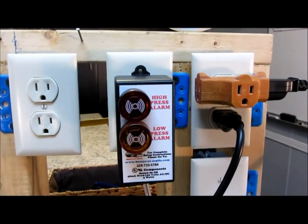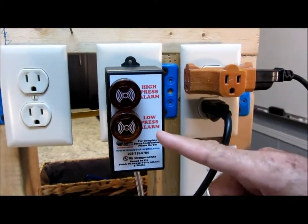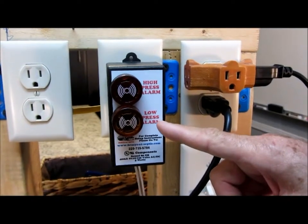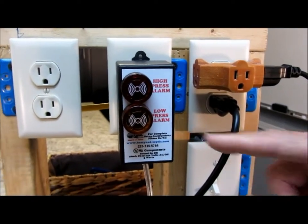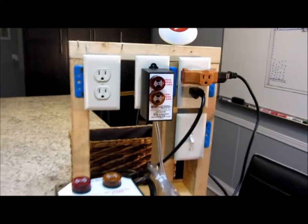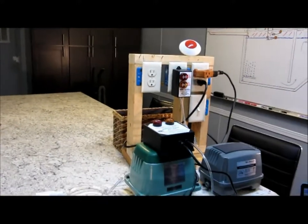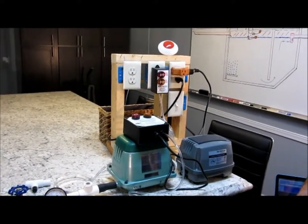If, on the other hand, the air pressure drops below 1 PSI, the yellow siren you see here will sound off and will signify that either your air pump is no longer functioning or that you have a break in the airline.